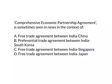Let me give you answers for yesterday's questions. The first question is: Comprehensive Economic Partnership Agreement is sometimes seen in use in the context of — free trade agreement between India and China, preferential trade agreement between India and South Korea, free trade agreement between India and Singapore, and free trade agreement between India and Japan. In the comment section, so many people tried the answer as B, but remember it is not preferential trade agreement.